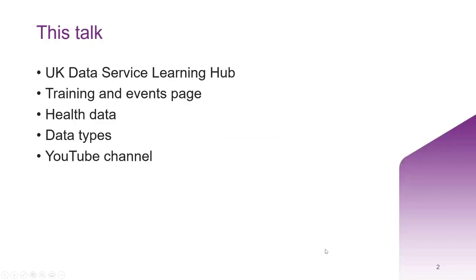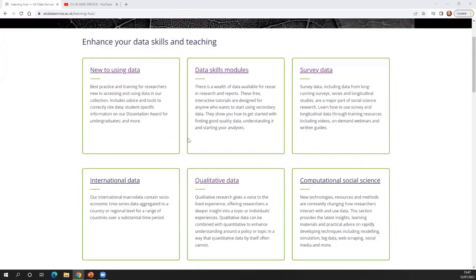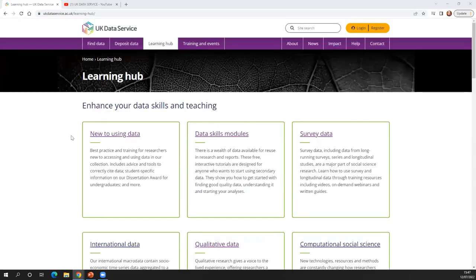In this talk I'm going to be covering the UK Data Service Learning Hub, our training and events page — which some of you might be familiar with as it might be how you booked onto this conference — places you can find our key health data sets, how you can search for data by a particular type, and a quick introduction to our YouTube channel. The UK Data Service Learning Hub is a central point for access to our learning resources and data skills training. You can find it on our website by clicking on the tab at the top that says Learning Hub. Once you head there, you'll see different tiles targeted to different data skills and training needs.